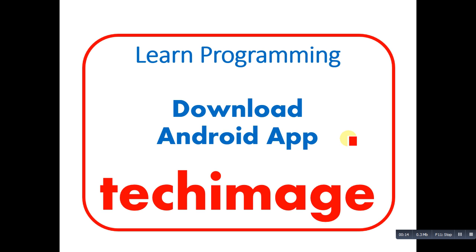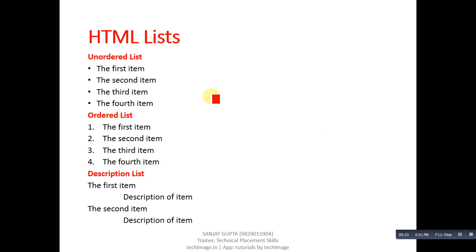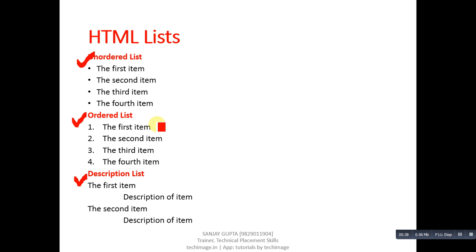Before starting, note the name of my Android app, TechMS — you can use this app to learn programming. There are three kinds of lists available: first is unordered, second is ordered, and third is description list. In an unordered list, numberings are not available, but in an ordered list you can assign numbers to list items. In a description list you can assign sub-items to items.